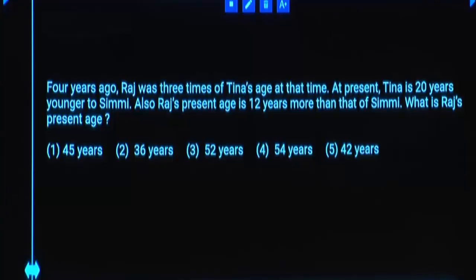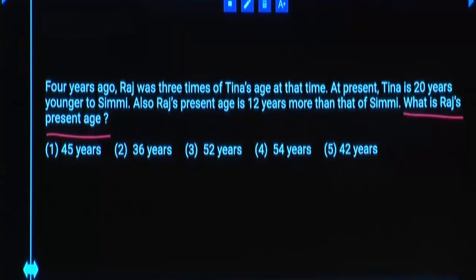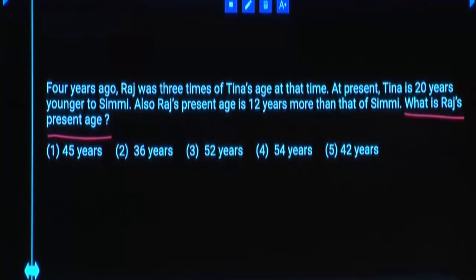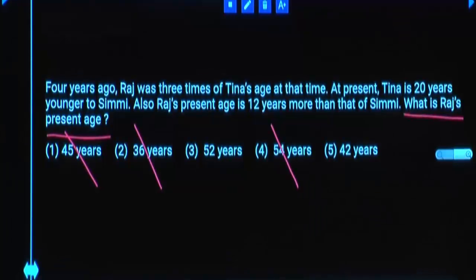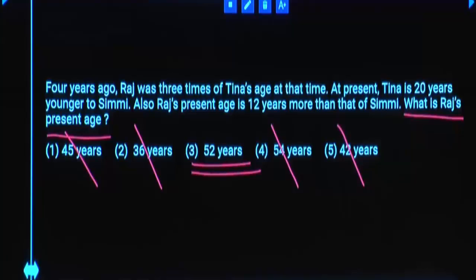4 years ago, Raj's age was 3 times Tina's age at that time. You are asked about Raj's present age. 4 years back, Raj's age was a 3 multiple. To get present age, add 4 years. A 3 multiple plus 4 will not be a 3 multiple. So first, second, fourth, and fifth options are eliminated. Final answer: third option.